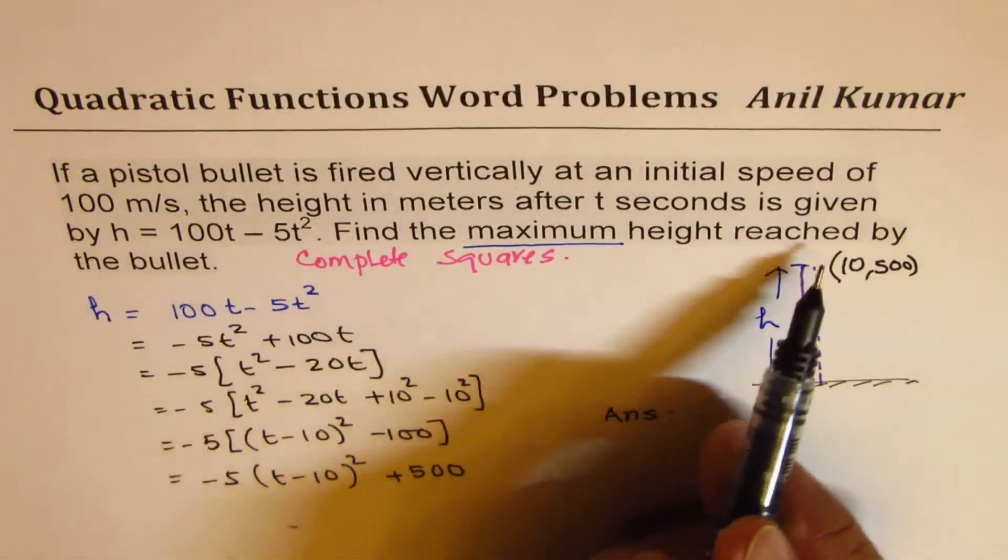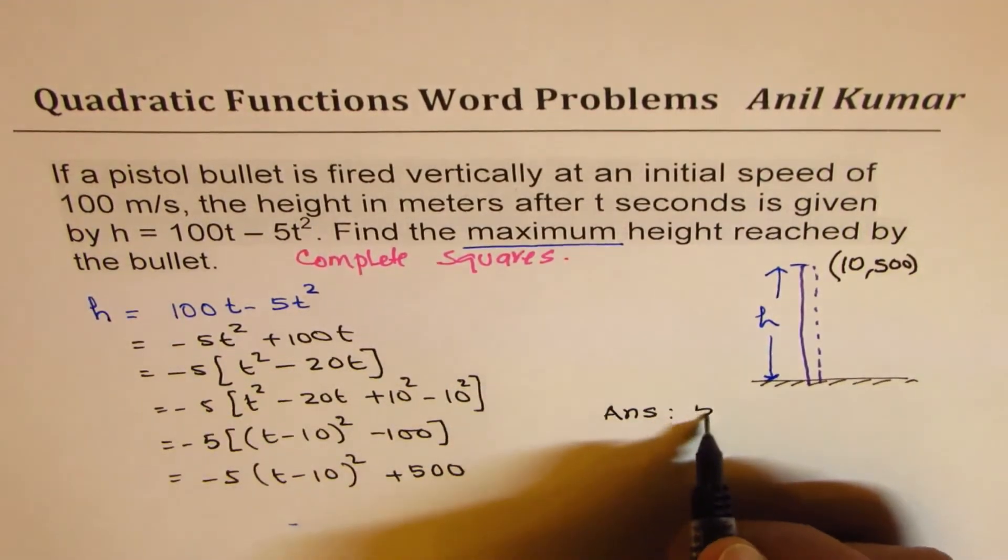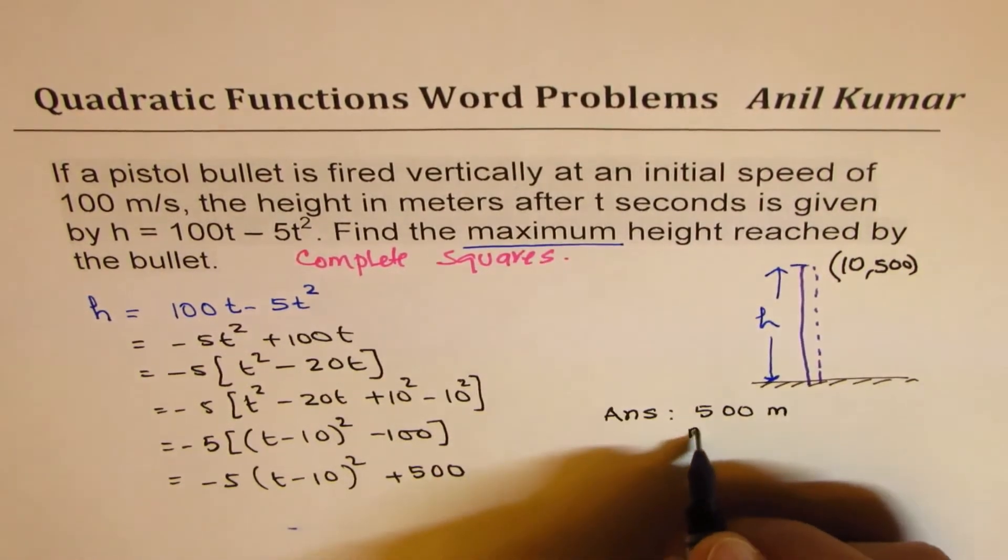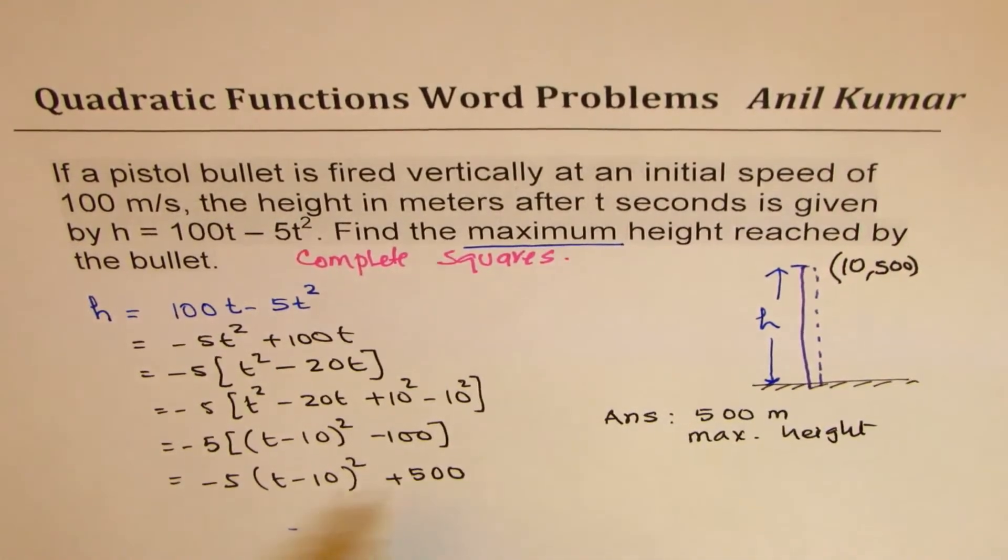And your answer is, find the maximum height reached by the bullet. And the units are meters. So you have to mention meters. So 500 meters is your answer. Maximum height. Does it make sense? Okay.